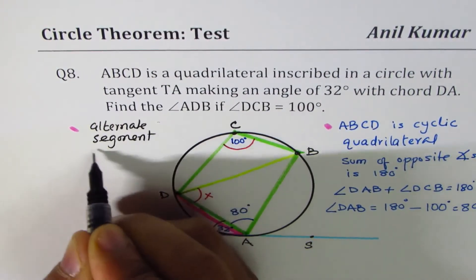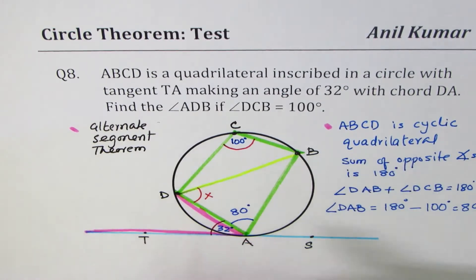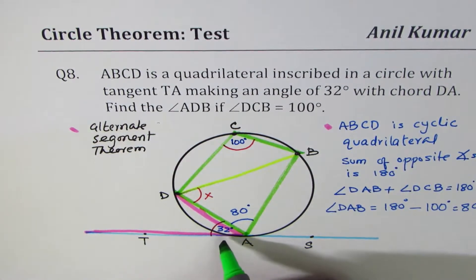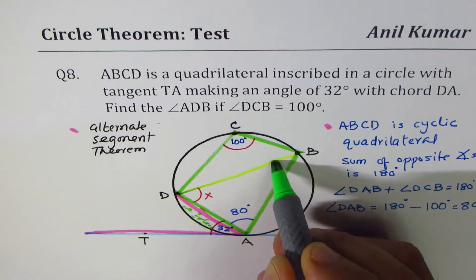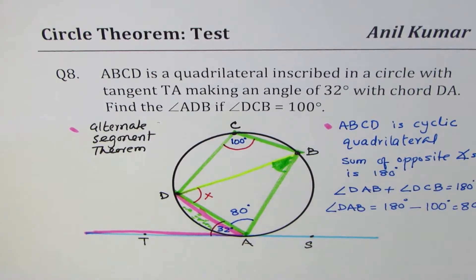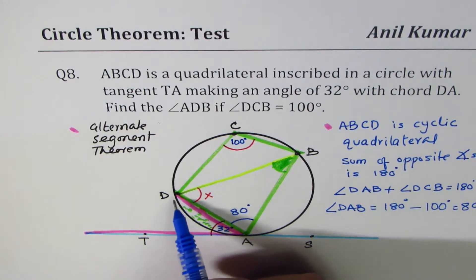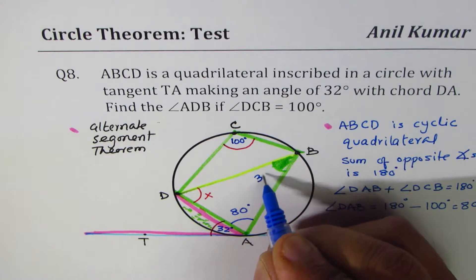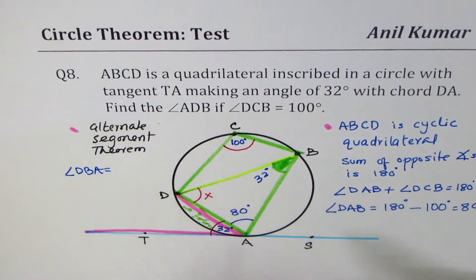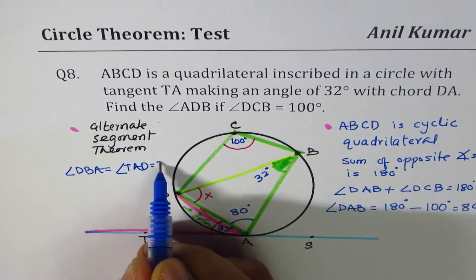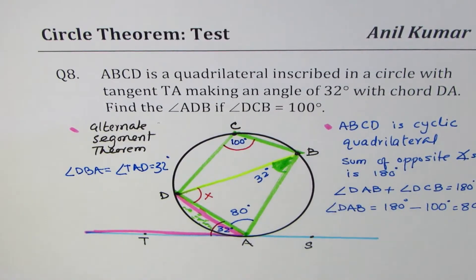Which says that this angle should be equal to... Now we're talking about this segment. The alternate segment's angle opposite to this segment is right there. So from alternate segment theorem, the angle DBA should be 32 degrees. So we know angle DBA equals to angle TAD, which is 32 degrees.